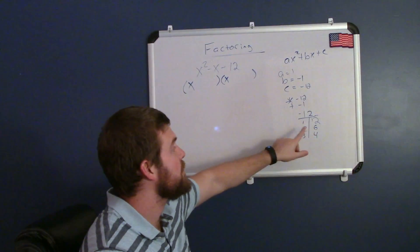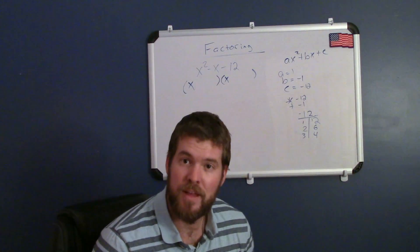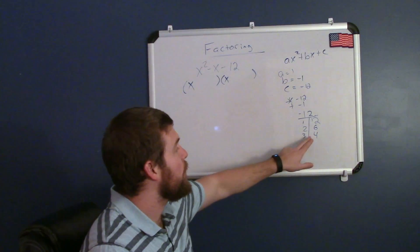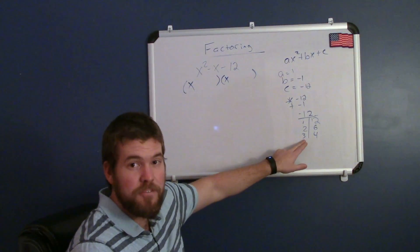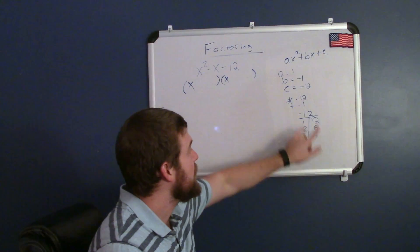Negative 6 plus 2 gives me negative 4, and negative 12 plus 1 gives me negative 11, but I've already seen the answer here. Negative 4 plus 3 gives me negative 1, and together would multiply to be a negative 12.